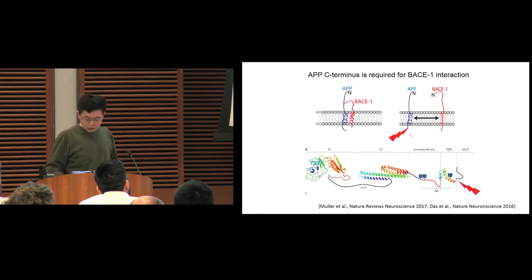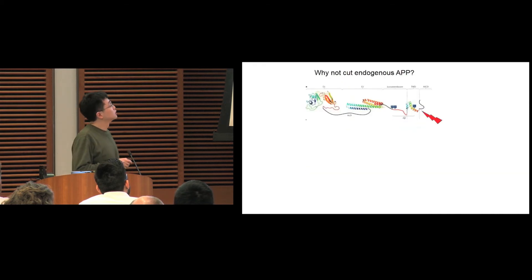Why can't we cut the C-terminal of endogenous APP? In that way we can block the interaction of APP and BACE1 at the endogenous level. So how to do that?